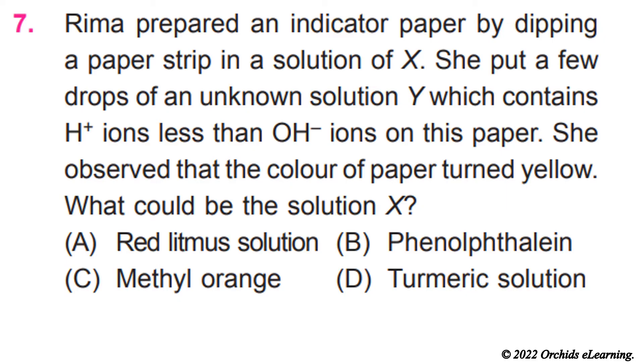Rima prepared an indicator paper by dipping a paper strip in a solution of X. She put a few drops of an unknown solution Y which contains H plus ions less than OH minus ions on this paper. She observed that the color of paper turned yellow.